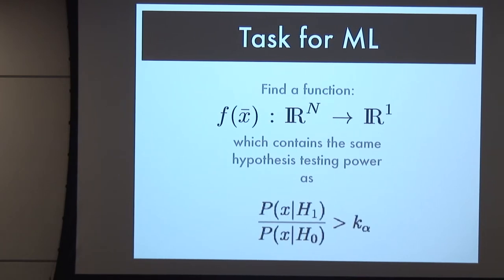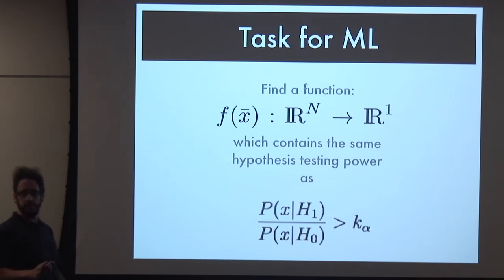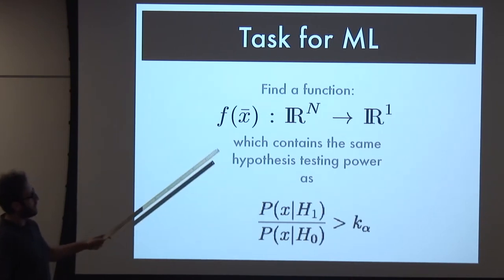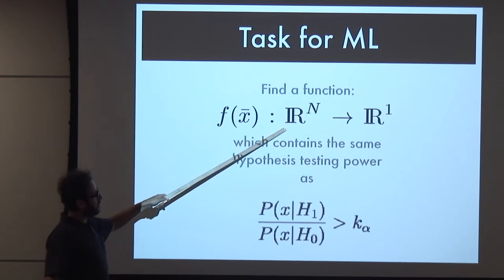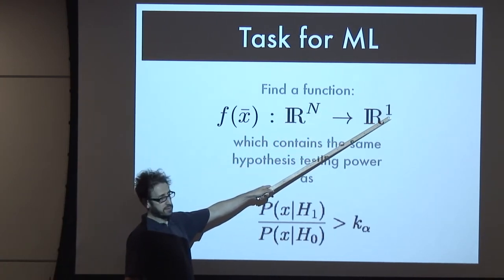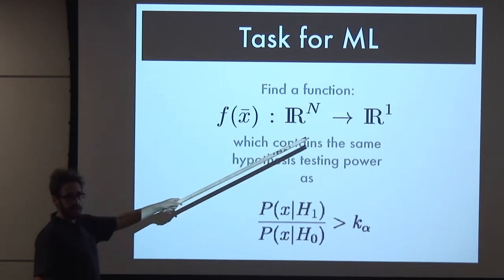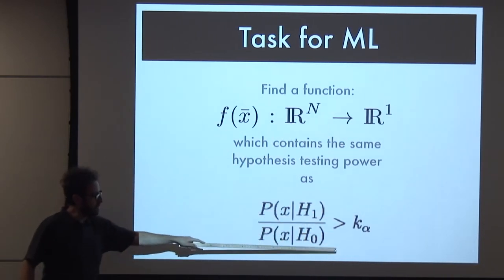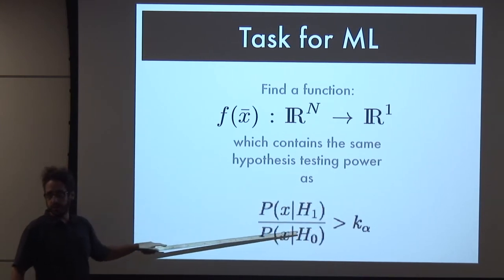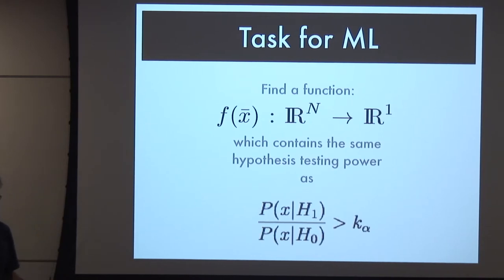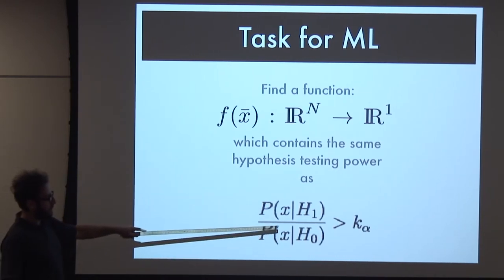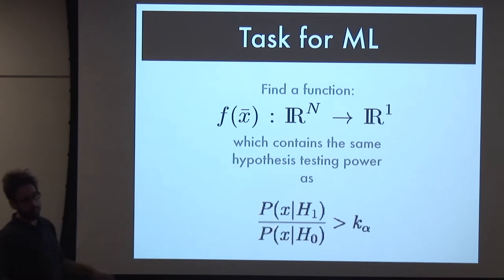I believe in trying to formulate a problem clearly. When the AI overlords arrive, we should be prepared to ask them exactly what we want. This is exactly what we want machine learning to do: find me some function from a high-dimensional space where my data lives down to a one-dimensional space. I don't care about anything about that function except I want it to have exactly the same power as the optimal one - which is the likelihood ratio.